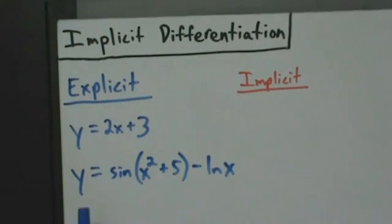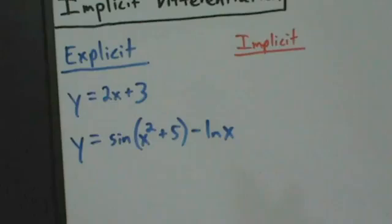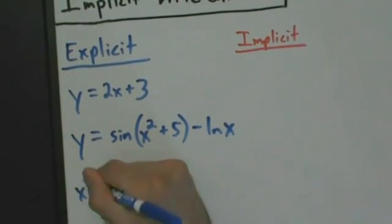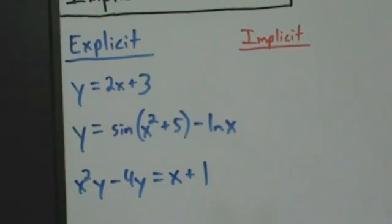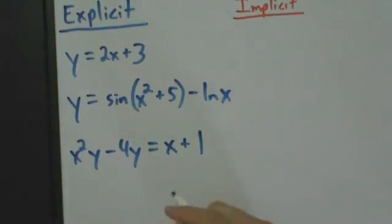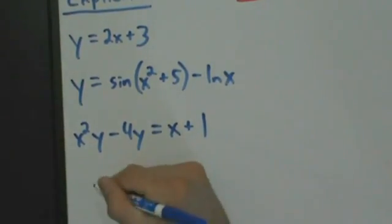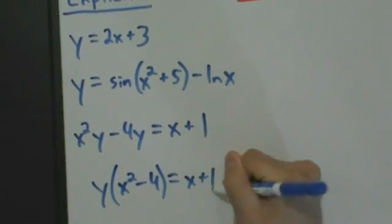It's a bit more complicated, but still we have y by itself on one side of the equal sign, and everything else on the other side is just x's, numbers, and functions. Here y is expressed explicitly as a function of x. So another example would be x squared y minus 4y equals x plus 1. At first glance this doesn't look explicit because y is not by itself, but we can actually solve for y and get a unique answer. We can factor a y from the left side, giving us y times the quantity x squared minus 4 equals x plus 1.